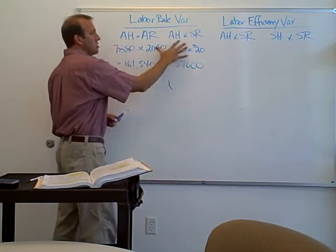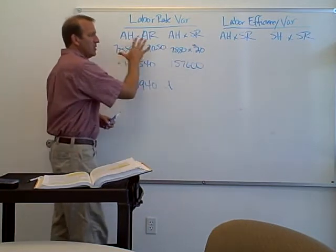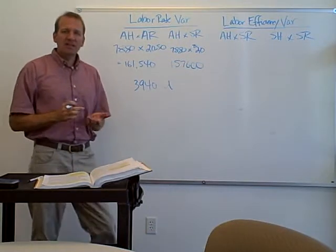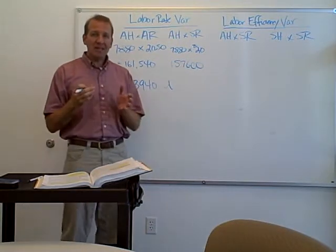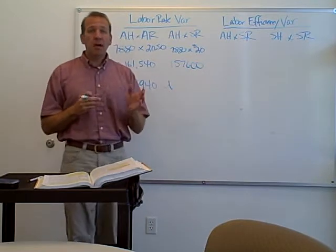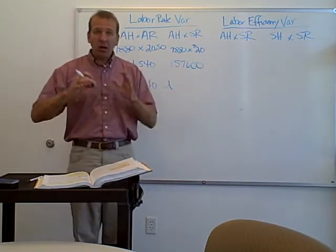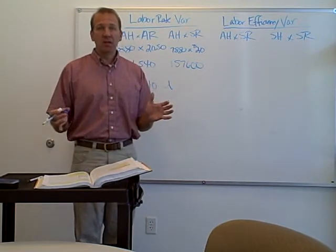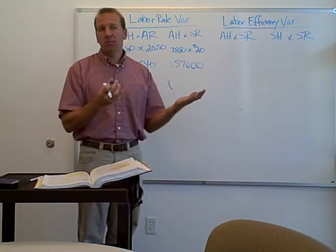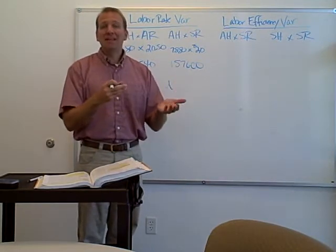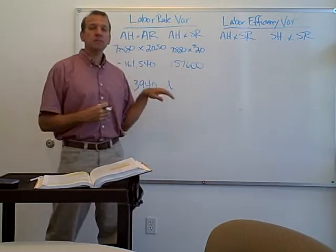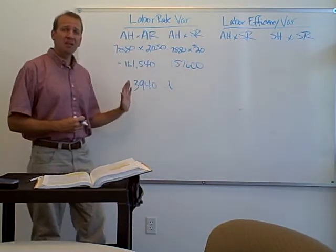This is going to be unfavorable because our actual rate was higher, giving us a $3,940 unfavorable labor rate variance. This information has to be given to us in a problem — we can't make it up. That's what makes this chapter straightforward, similar to the budgeting chapter, where they give you all the information and you plug it in.